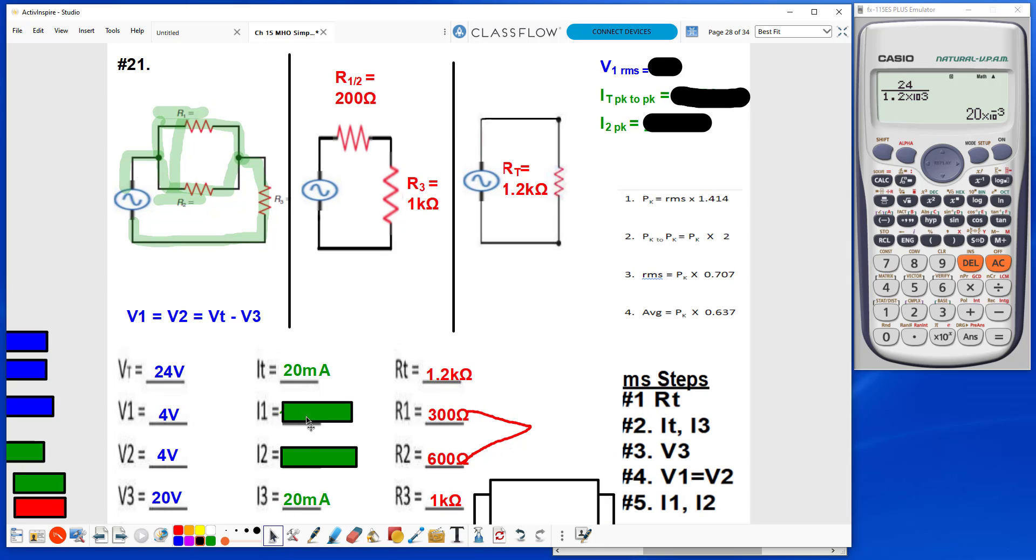Now I can find I1 by taking V1 divided by R1, giving me 13.33 milliamps. I can find I2 by taking the V2 divided by R2, and that gives me 6.67 milliamps.